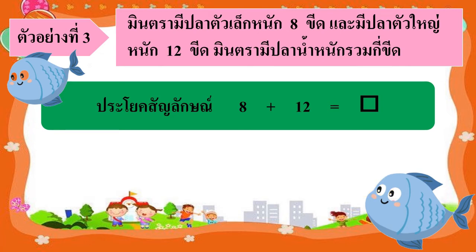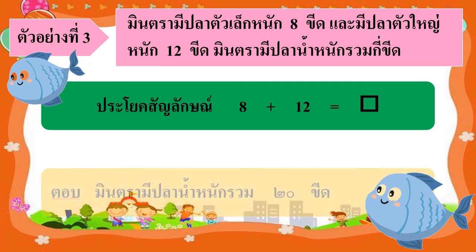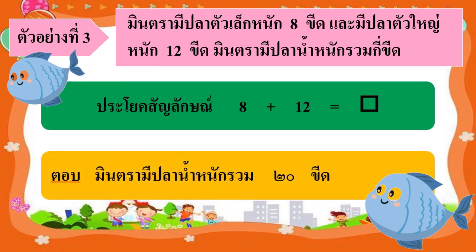จากนั้นเรามาหาคำตอบของประโยคสัญลักษณ์ 8 บวก 12 เท่ากับ 20 นั่นเอง จึงทำให้เราสรุปได้ว่า มินตรามีปลาน้ำหนักรวม 20 ขีดนั่นเอง